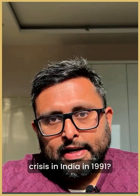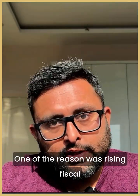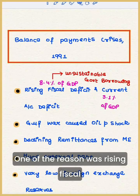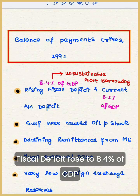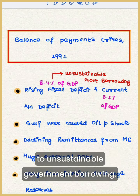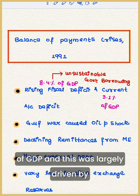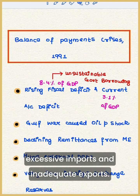What were the reasons for the BOP crisis in India in 1991? One of the reasons was rising fiscal deficit and current account deficit. Fiscal deficit rose to 8.4% of GDP in 1990-91, leading to an unsustainable government burden. Current account deficit rose to 3.1% of GDP, and this was largely driven by excessive imports and inadequate exports.